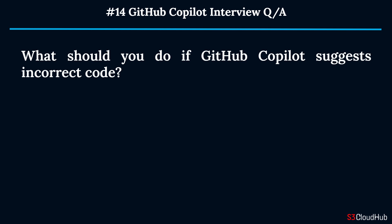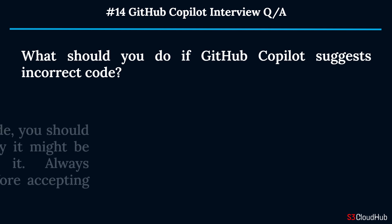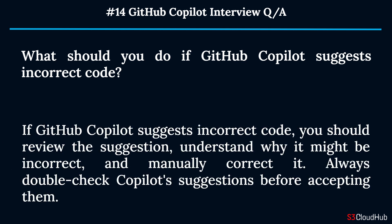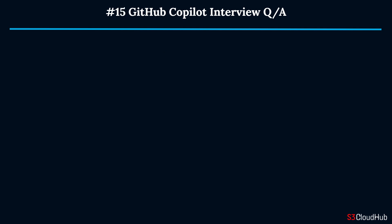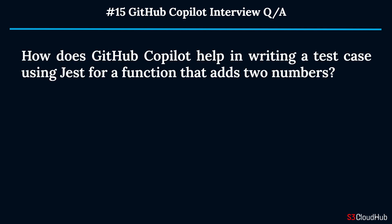Question fourteen: What should you do if GitHub Copilot suggests incorrect code? If GitHub Copilot suggests incorrect code, you should review the suggestion, understand why it might be incorrect, and manually correct it. Always double-check Copilot suggestions before accepting them.